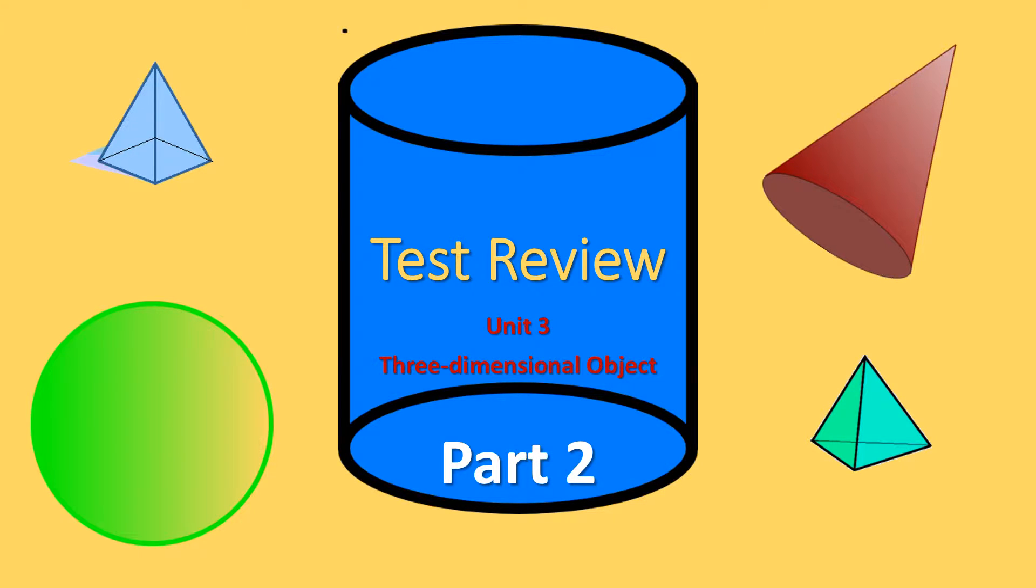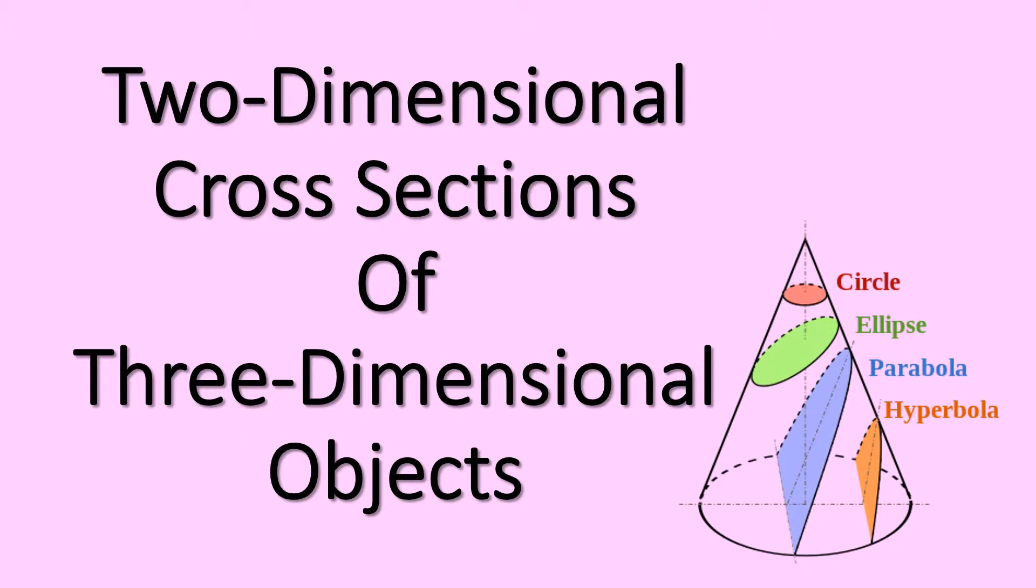This is part two of reviewing for the test for Unit 3 with three-dimensional objects. In this section we're going to be looking at two-dimensional cross-sections of three-dimensional objects.